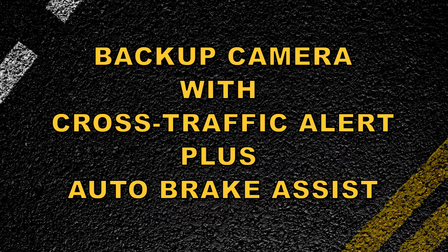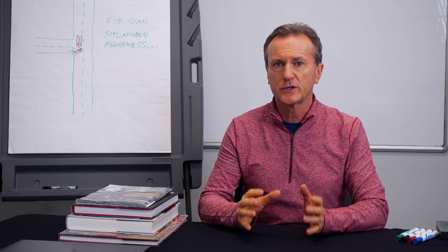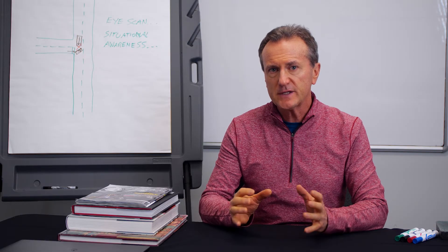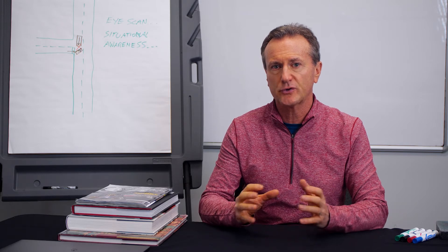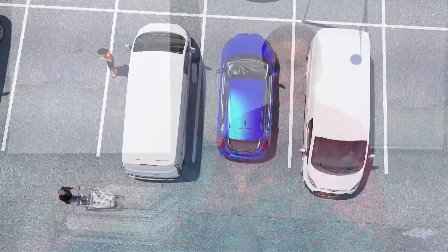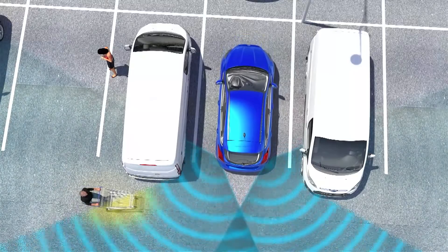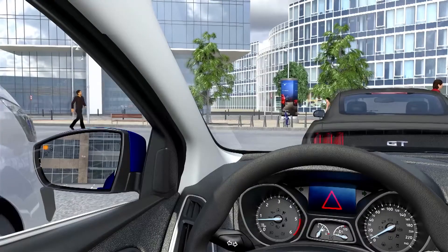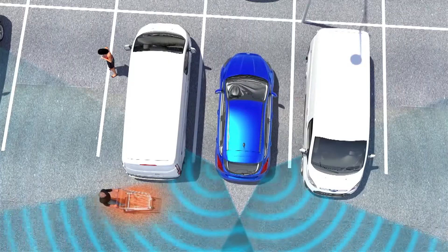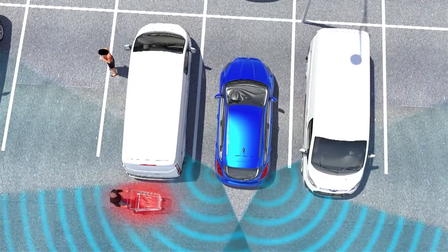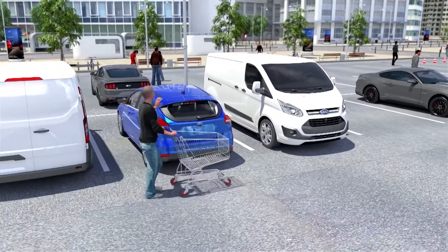Some rear cross traffic alert systems also come with auto braking functions. If this type of system sees cross traffic coming and does not sense any input from the driver to stop or slow, then the system will automatically apply the vehicle brakes — but only if the system sees what is in the vehicle path.